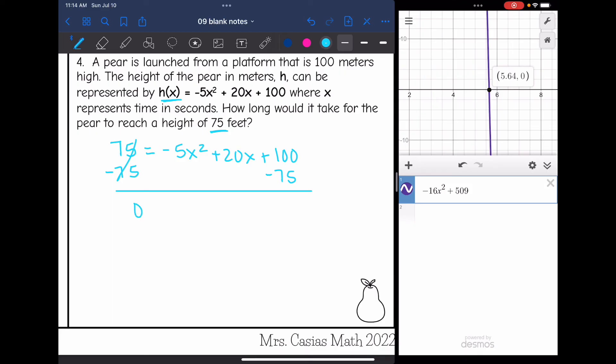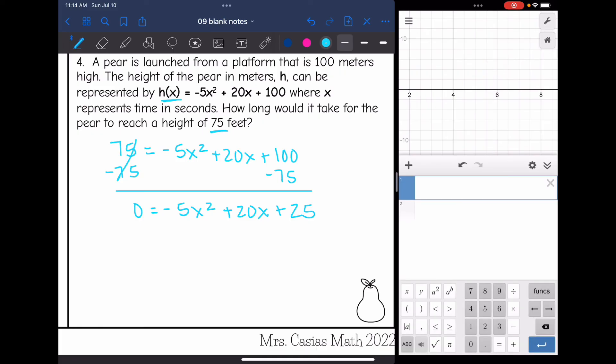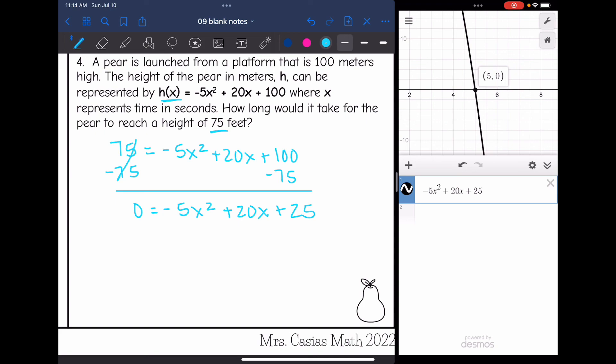I get 0 = -5x² + 20x + 25. Now I'm going to graph this equation and look for the positive zero. So -5x² + 20x + 25. I can see it right here. It will take 5 seconds for it to reach that height of 75 feet.